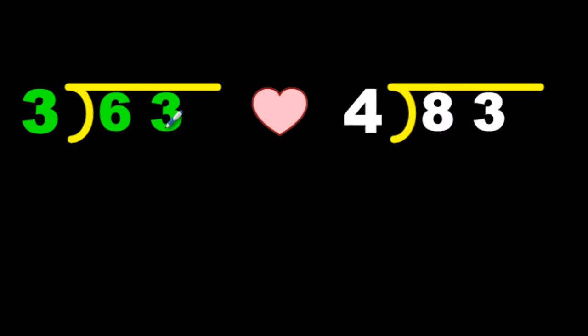You have to read these equations right to left. You got to read them backwards. So what this actually states is 63 divided by 3. You're going right to left, 63 divided by 3. What would this equation say? If you said 83 divided by 4, you're absolutely correct.